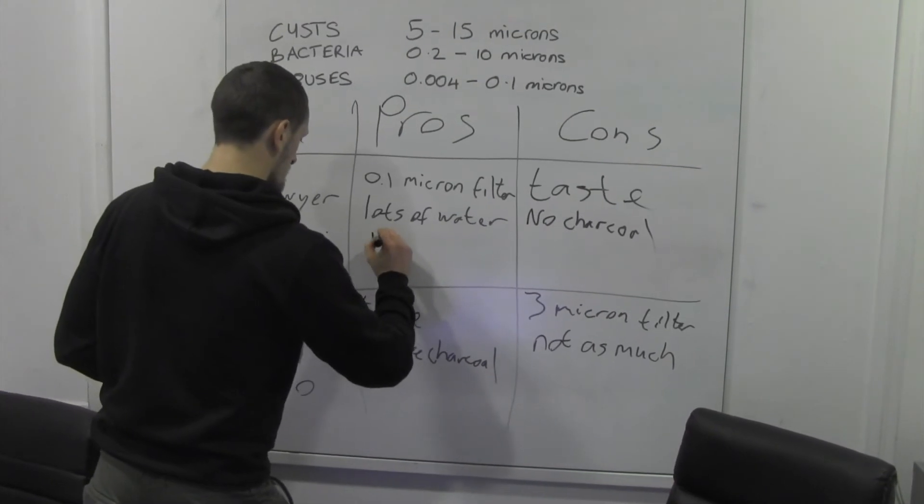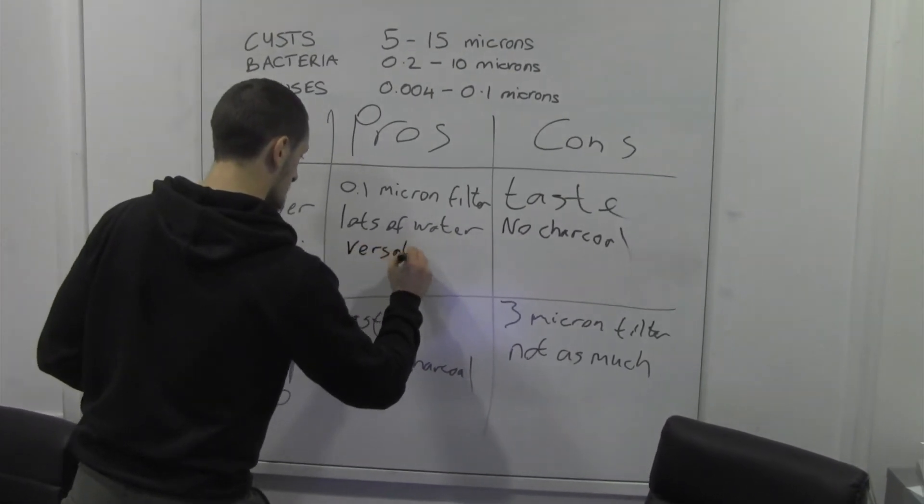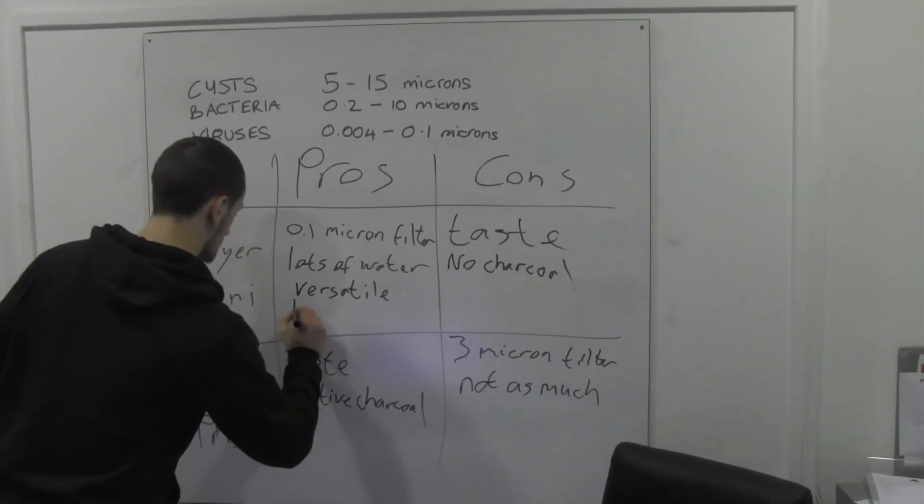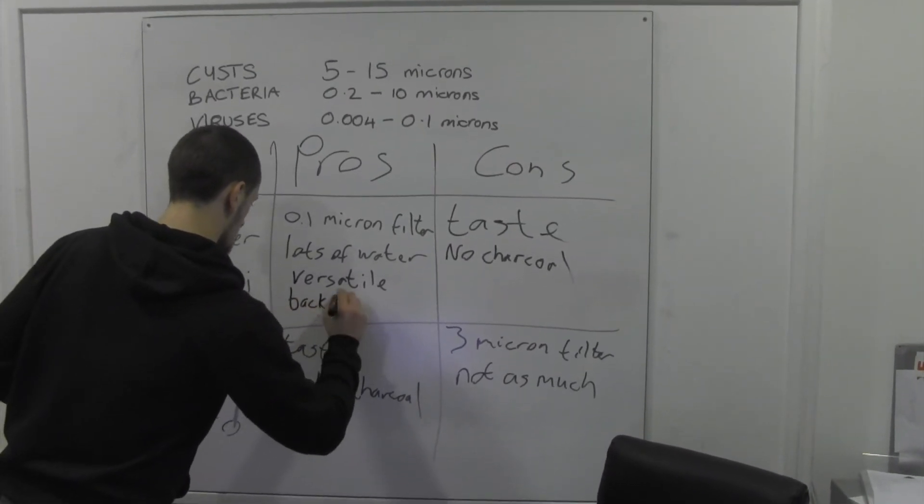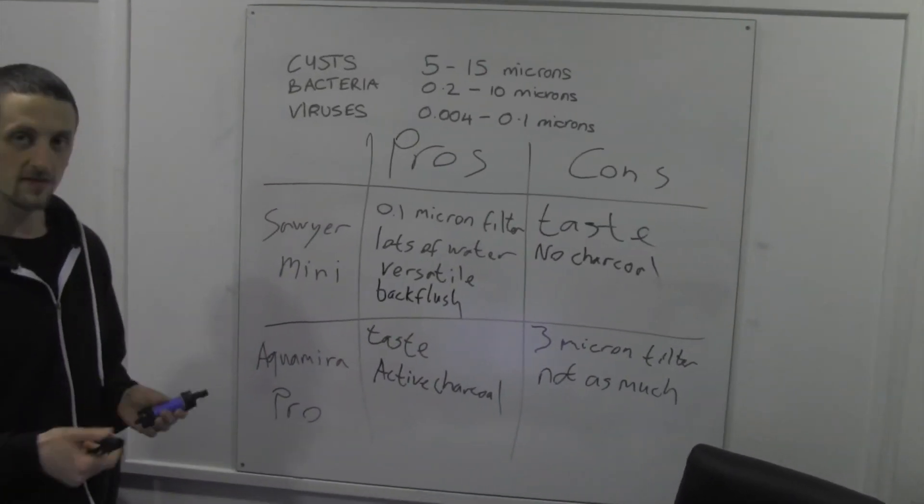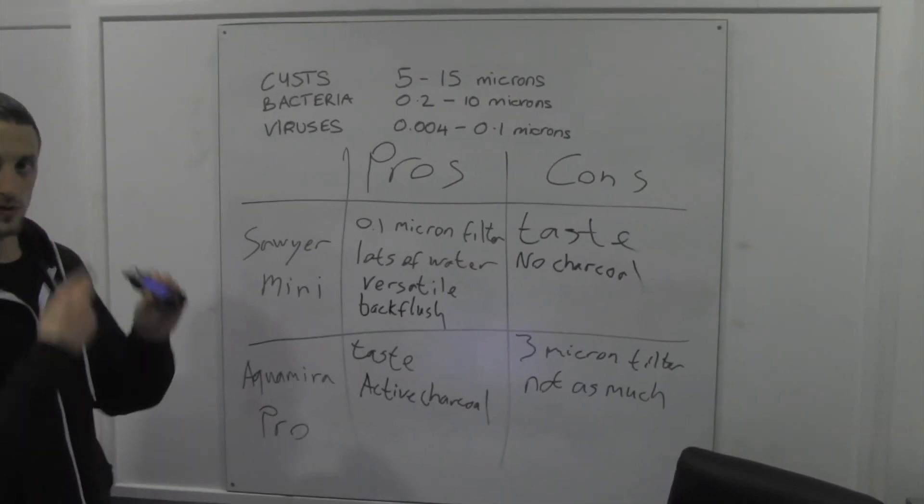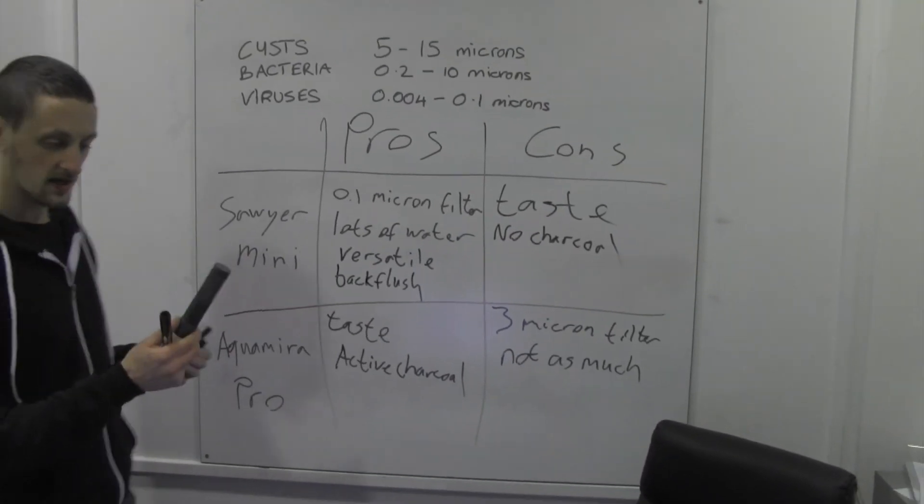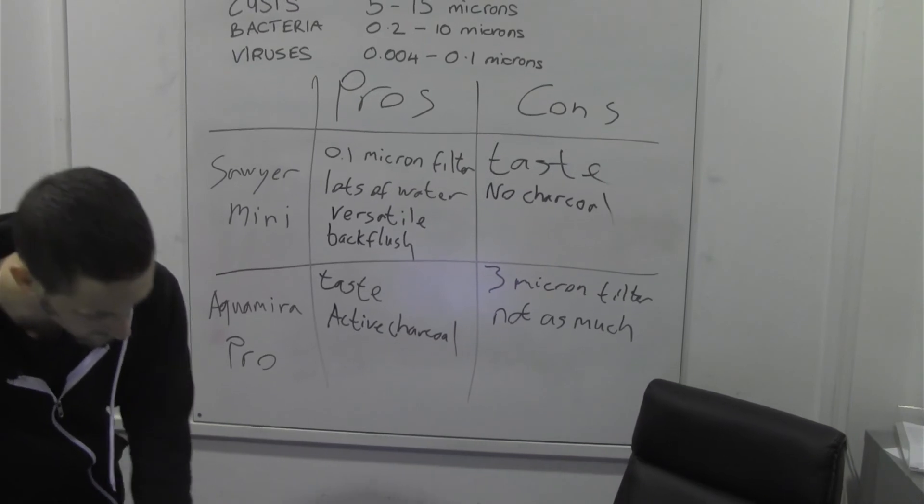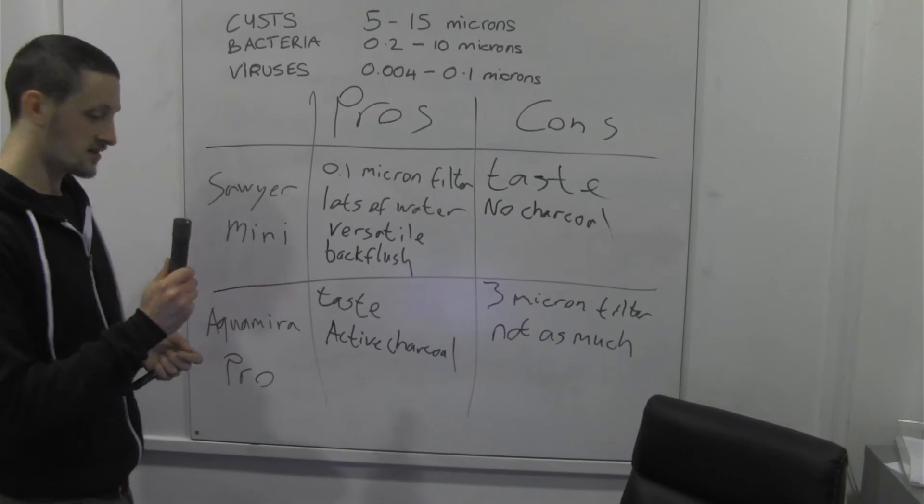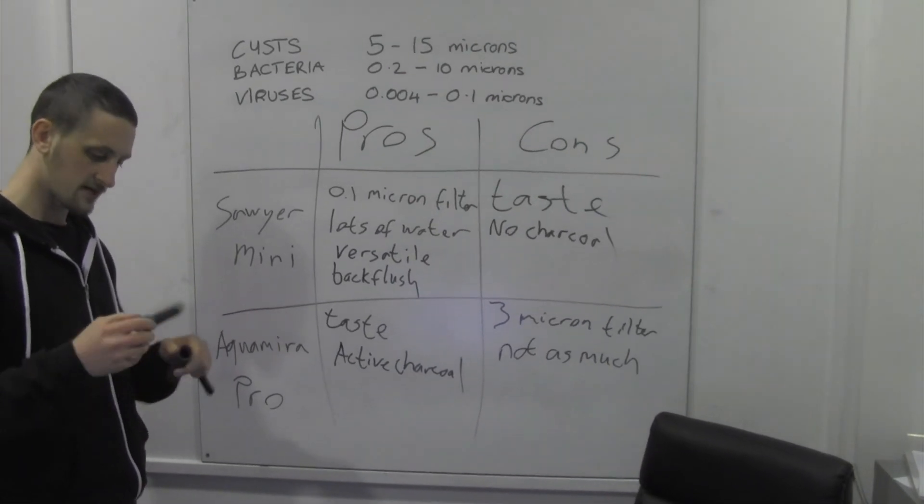Pros. Sawyer Mini, more versatile, I touched on it a minute ago. You can put this in line with your hydration pack as well. Another pro, you can back flush this one. So if you're into some pretty nasty water and your filters get clogged, this one you're going to be able to push water back through and unclog it. This one, however, I don't think you can.